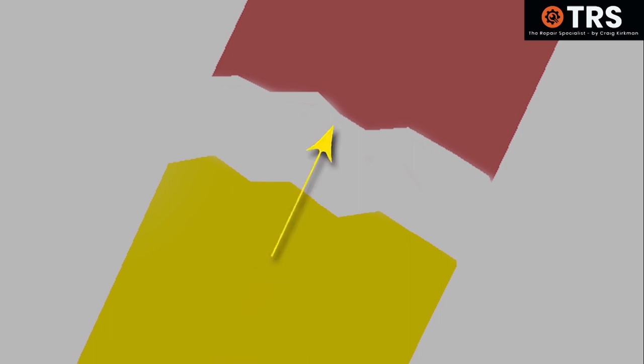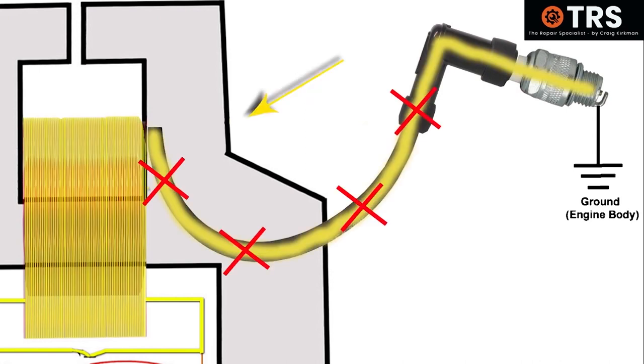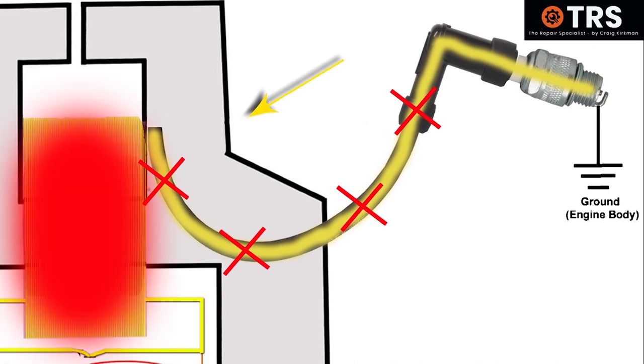Also, the connection between the HT lead and the spark plug cap, it's important to make sure that's a good solid connection and there's no slight gaps there. Because as we've already seen, if there is slight gaps, it's going to cause a resistance for that flow to get out of the coil, and it's going to make the coil work harder and cause problems.